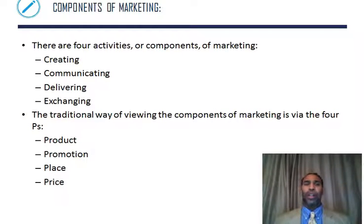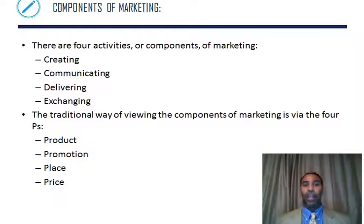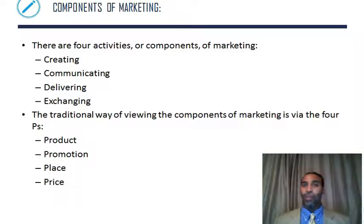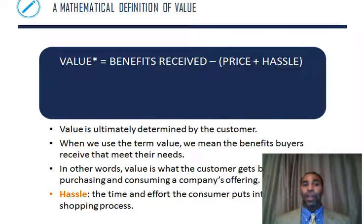So these are the four components of marketing: creating, communicating, delivering, and exchanging. This slide shows how they relate to the traditional four Ps: product, promotion, place, and price. I create a product; if I communicate, that's promotion of the product; deliver means I have to get it to a place through my logistics; and exchanging is price, because you're going to give me the amount of money it costs for the laptop.